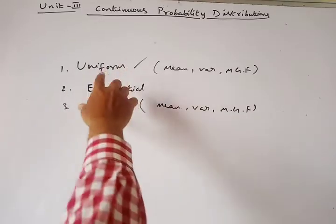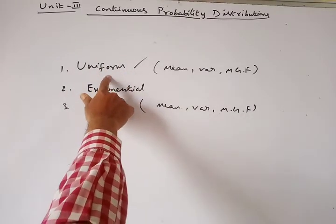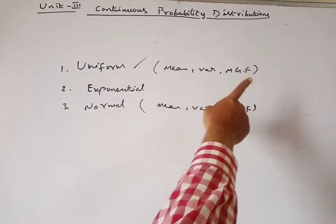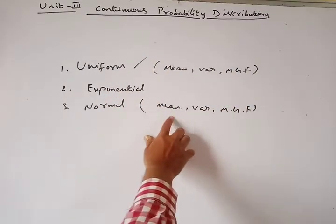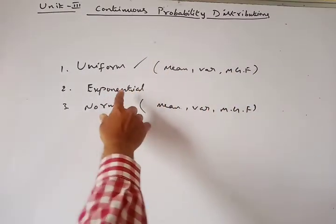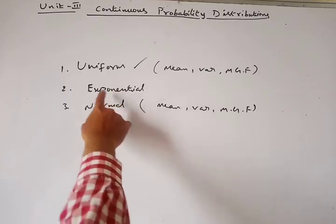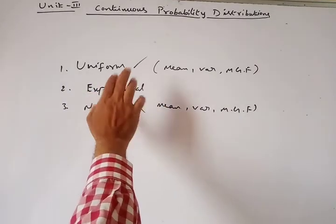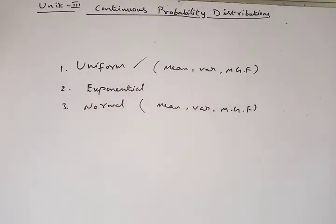In one previous video we already completed uniform distribution — mean, variance, and MGF — and normal distribution — mean, variance, and MGF. Now in this class we will discuss exponential distribution: mean, variance, and MGF. Let us start with the exponential distribution definition.